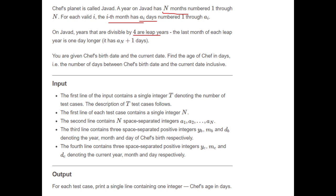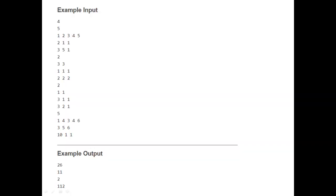You are given chef's birth date and current date and we need to find the age of chef in days. The input includes T test cases, N representing the number of months in a year, and A1 through AN representing the days in each month. The third line contains YB, MB, DB — the year, month, and day of chef's birth — and the next line contains YC, MC, DC — the current year, month, and day. We output a single integer: chef's age in days.